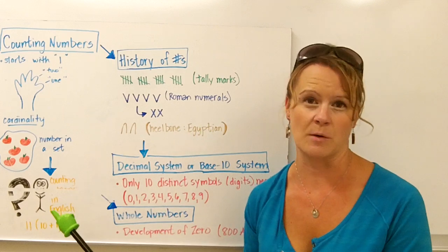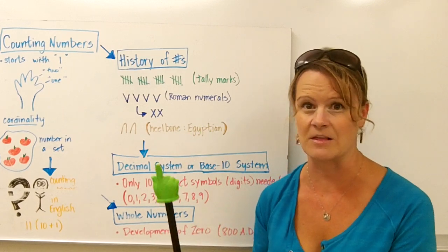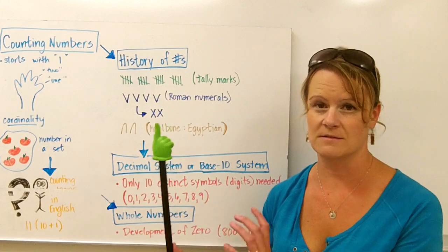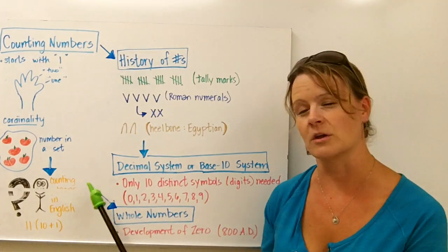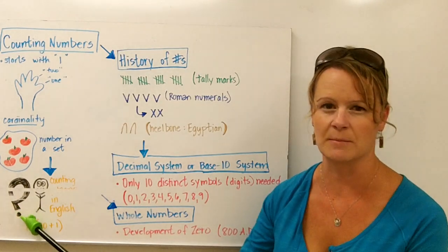Now some numbers in English make perfect sense. Think about sixty-three: six tens and three ones. So some do make perfect sense, but it gets a little confusing in the teens, so a possible misconception to keep in mind.